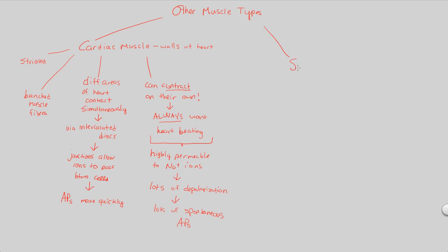The other muscle type of interest is smooth muscle. Smooth muscle, the third type, can be found on the walls of several different parts of the body: specifically the digestive tract, the walls of the bladder, the walls of the uterus — something we saw during reproduction lectures — and also on the walls of many blood vessels. These all have one thing in common: they are not attached to any bones; these are free, floating organs.